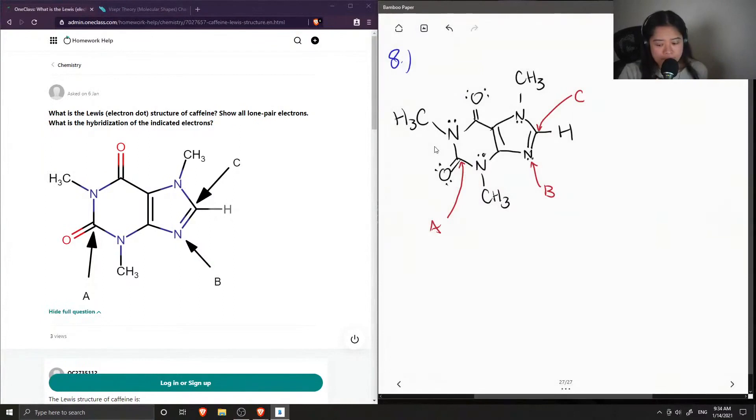Okay, so one way I like to figure out the hybridization of an atom is just to find the number of charged clouds. So I'll explain what the term charged clouds means. Find number of charged clouds.